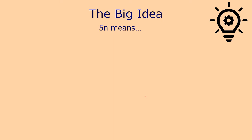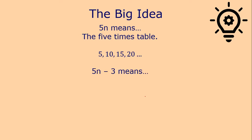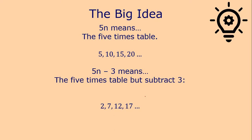So again, let's see this happen again. So 5n would be the five times table. If I said 5n take 3, what that really means is I want you to take the five times table and subtract 3 away from each term. So 5 take 3 is 2. 10 take 3 is 7. 15 take 3 is 12. 20 take 3 is 17. And you can think of 5n take 3 as a recipe or a rule for generating a sequence.